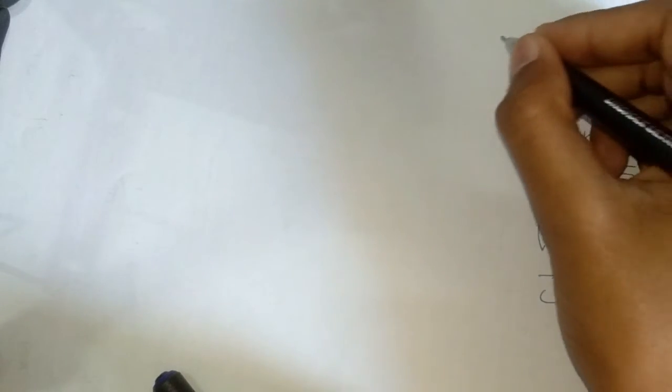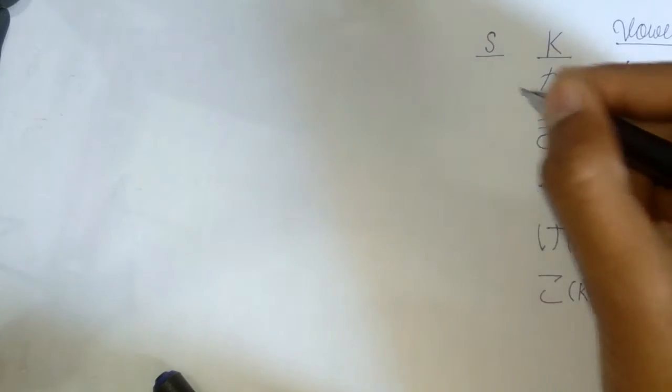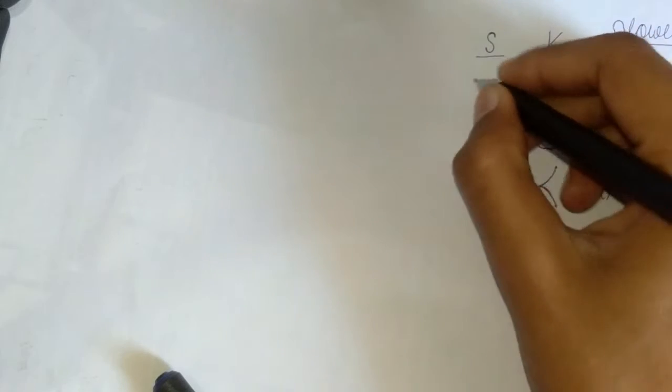So let's get straight to the video. Today's column is this column. I'm not getting proper light, so I have turned on my light. Yeah, today's column is S. The first hiragana in this column is sa.